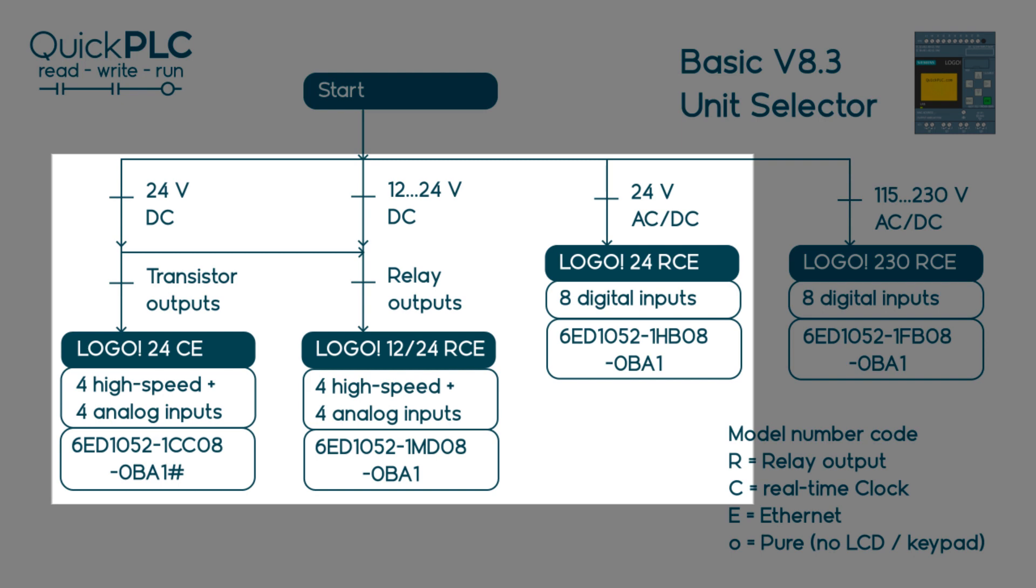The relay outputs can switch 10 amps resistive load. So choose between the 24 CE or the 1224 RCE where R is for relay.